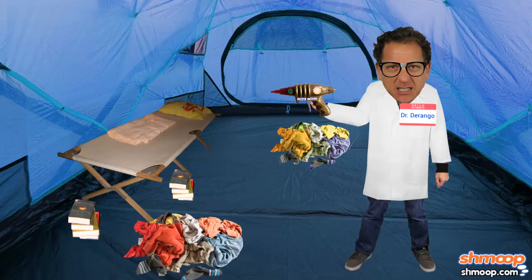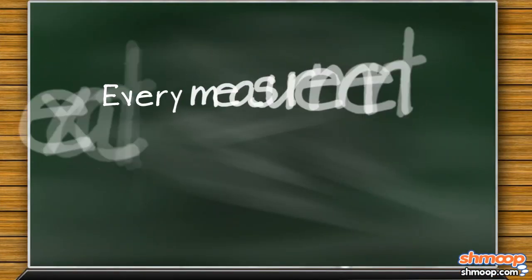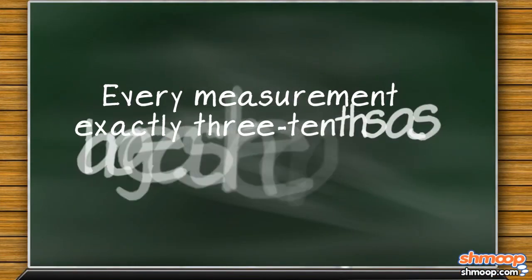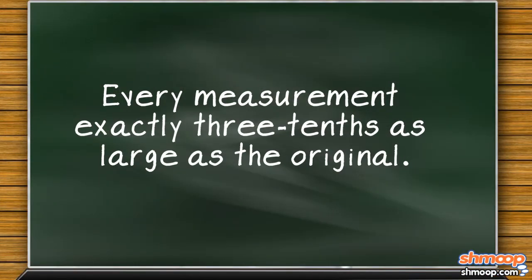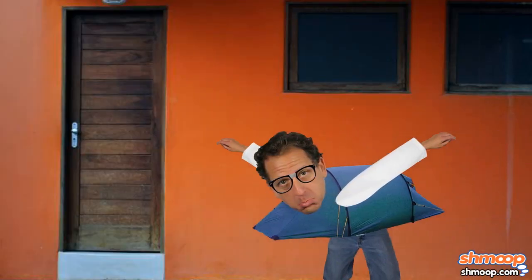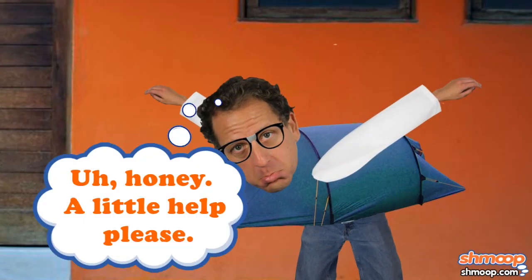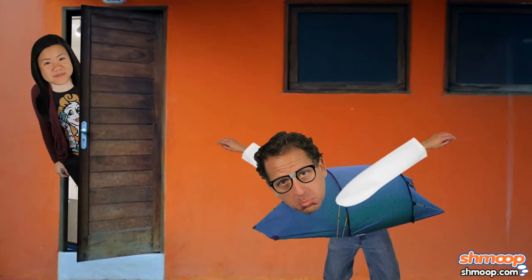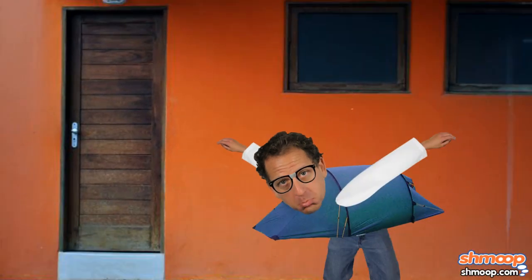He likes things snug and cozy. And boom. Suddenly, a second tent appears with every measurement exactly three tenths as large as the original. The trial's a success, although Dr. Durango really wishes he would have thought things through a little more carefully. He is not looking forward to the look his wife's sure to give him when he has to explain himself this time.